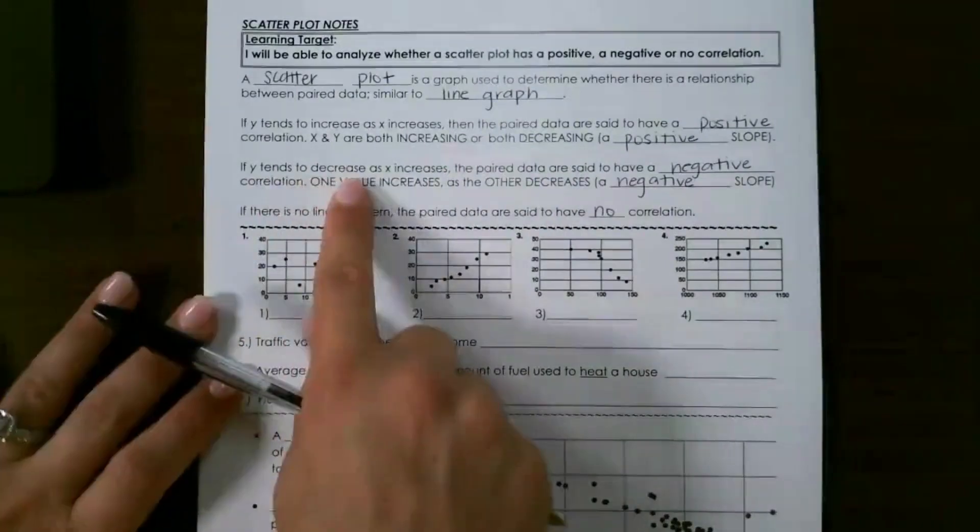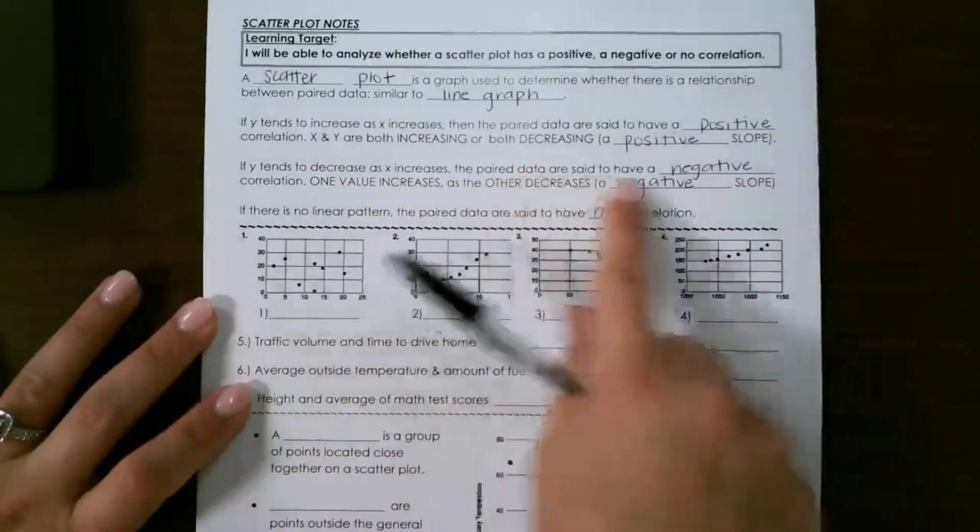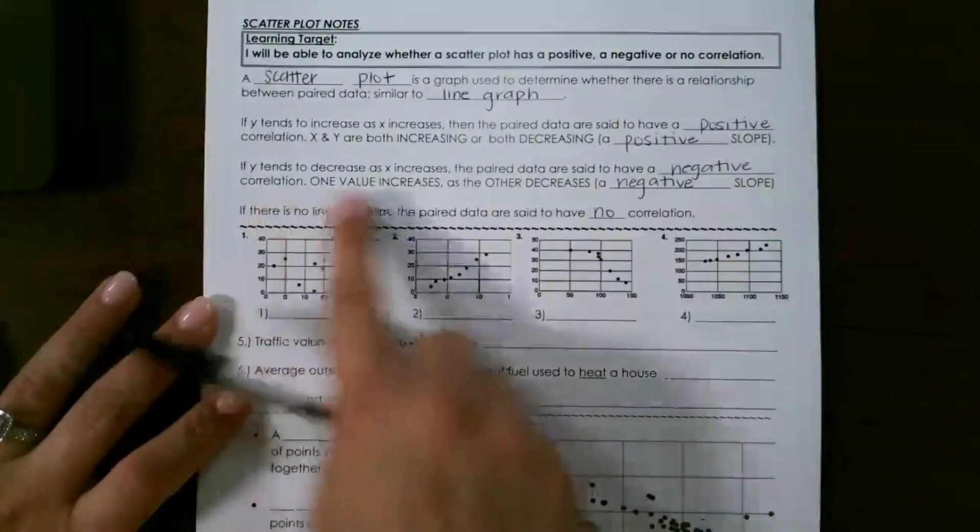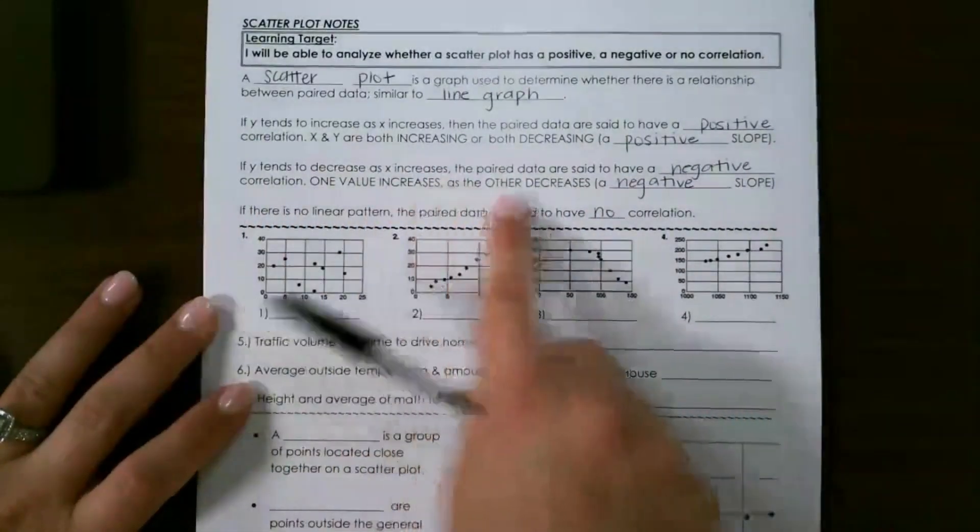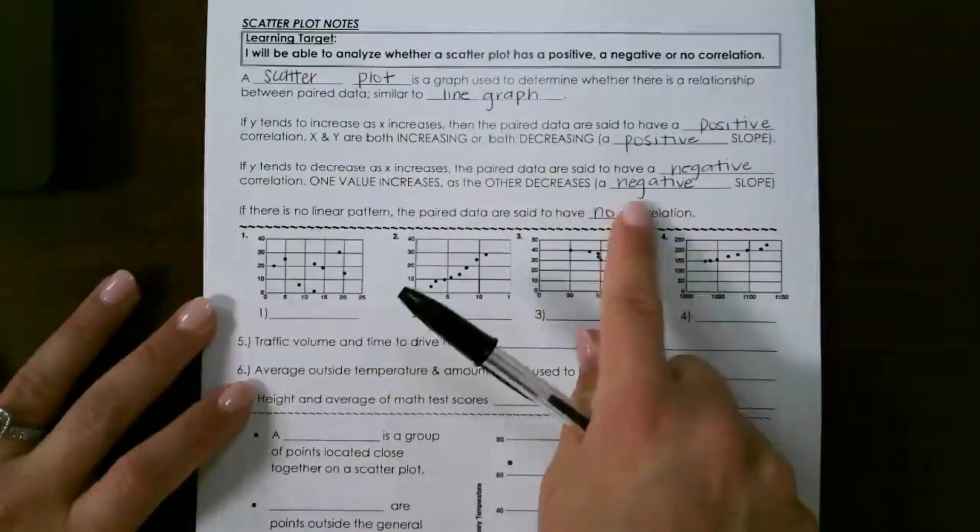If Y tends to decrease as X increases, the paired data are said to have a negative correlation. One value increases as the other decreases, which gives it a negative slope.